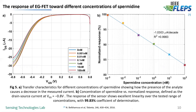We tested our devices for spermidine detection in the concentration range from 0.01 to 100 nanomolar, where we recorded the transfer curve. The transfer curves were recorded with successively increasing spermidine concentration, waiting five minutes between each measurement to allow the device to stabilize and the ions to rearrange. As seen in graph 5a, with increasing spermidine concentration, there was a decrease in the drain current ID. This decrease is due to the formation of an immunocomplex resulting from the interaction of anti-spermidine antibodies with the added spermidine.